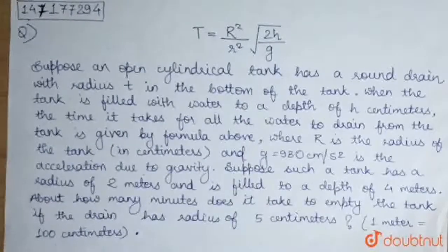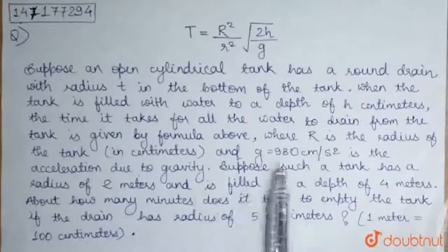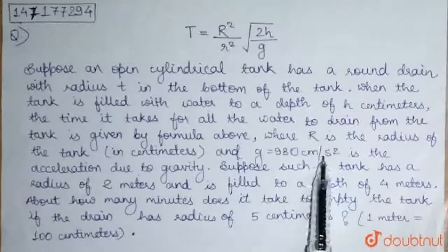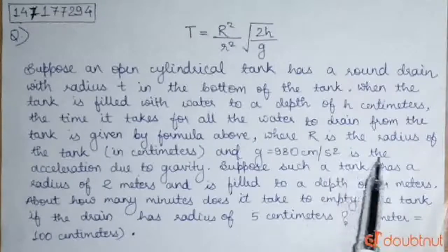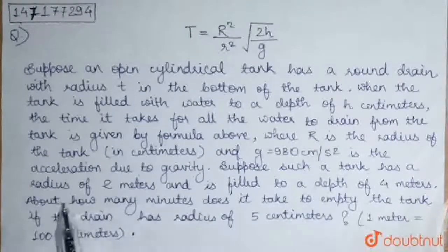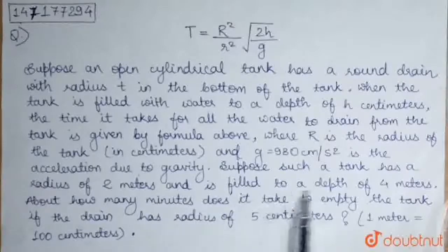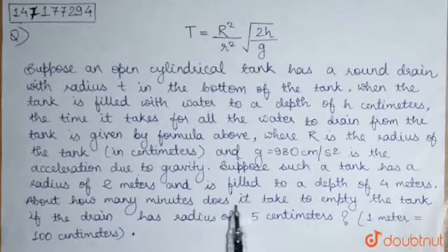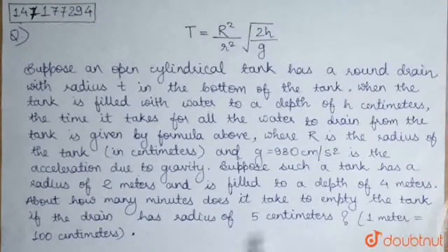Where R is the radius of the tank, and g equals 980 centimeters per second squared is the acceleration due to gravity. Suppose such a tank has a radius of 2 meters and is filled to a depth of 4 meters. About how many minutes does it take to empty the tank if the drain has a radius of 5 centimeters? One meter equals 100 centimeters.